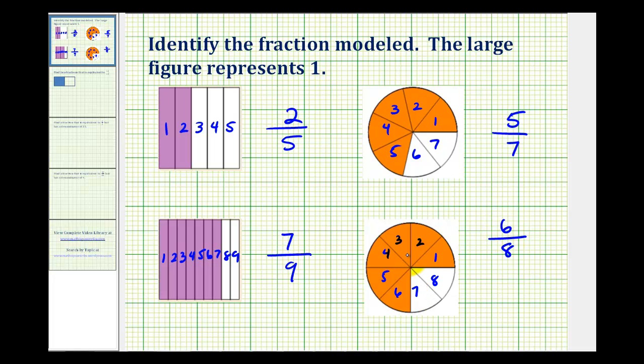But I also want to point out that we could have divided this into four equal pieces, dividing it this way. And if we divided the circle in this way so that we had four equal pieces, notice that one, two, three of the pieces would have been shaded.